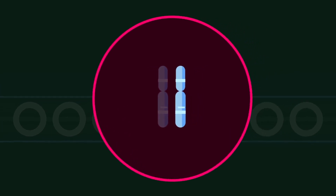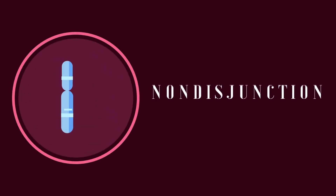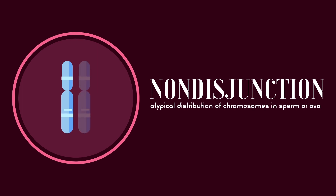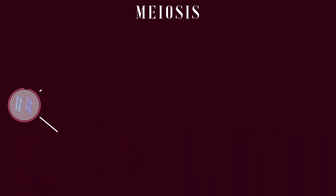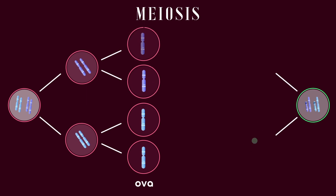At conception, the chromosome set for Turner's begins with 45X. Like Klinefelter's, an error during cell division called non-disjunction results in an atypical distribution of chromosomes in sperm or egg cells. During typical reproductive cell division, each egg gets a single X chromosome, leaving four egg cells each with an X.